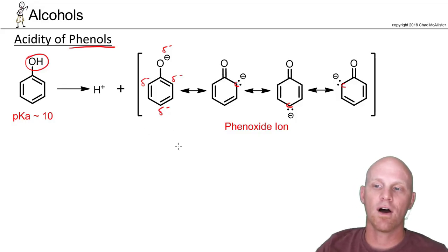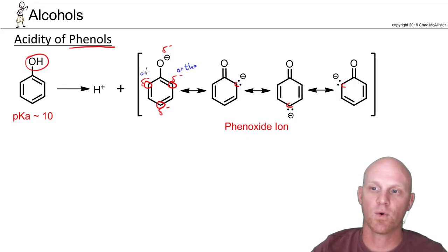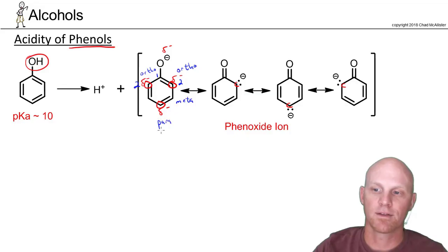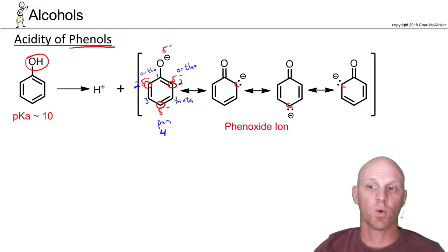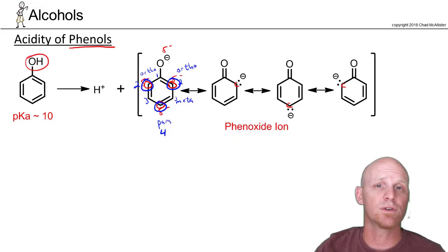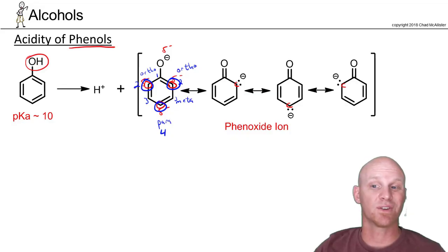Only three of the six ring carbons actually share that negative charge — the ones adjacent to the oxygen and the one opposite. These positions get special names: the adjacent positions are both called ortho positions (or position 2), the opposite position is called the para position (position 4), and the remaining positions are called meta (position 3). The key point is that only the ortho and para positions — positions 2 and 4 — share the negative charge. So to affect the acidity of a phenol the most, attach substituents at positions 2 and 4 specifically.